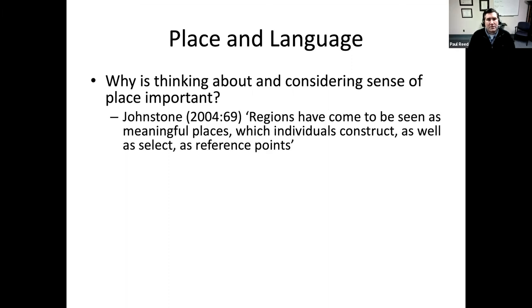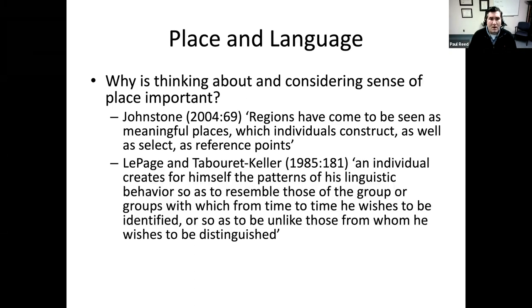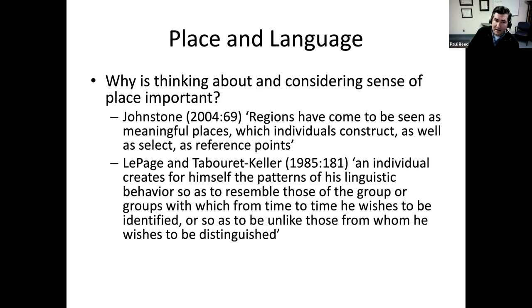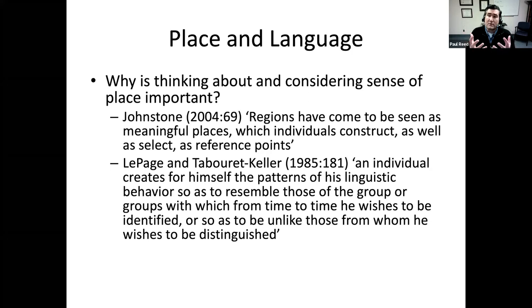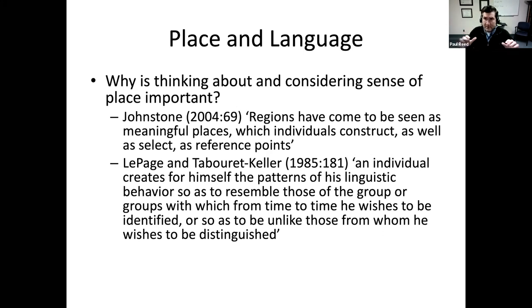But why should we consider sense of place? Johnstone (2004) said regions have come to be seen as meaningful places which individuals construct as well as select as reference points — it's not just that place affects everyone, but an individual is involved in that process. LePage and Tabouret-Keller noted that an individual creates patterns of linguistic behavior to resemble groups they wish to be identified with and to be unlike those from whom they wish to be distinguished. Region and place have meaning for groups and individuals.